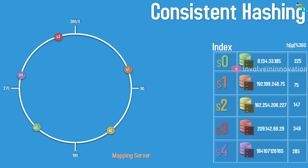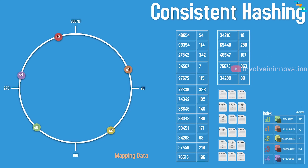Next we map the data onto the ring. We use a hash function (same or different from the server hash function, but it must be consistent for all data) that takes the request ID and performs modulo 360. For the data, we get angles such as 54, 114, 342, 7, 115, 338, 182, 146, and so on. We map these data points to their corresponding angles on the circle.